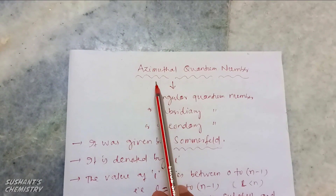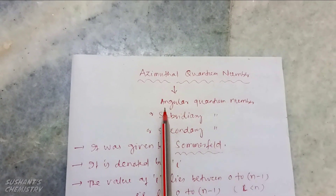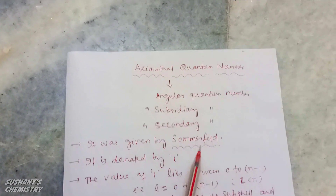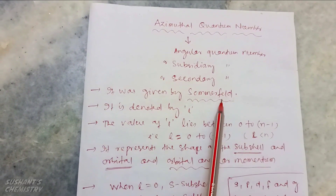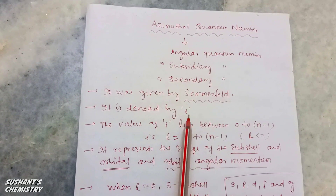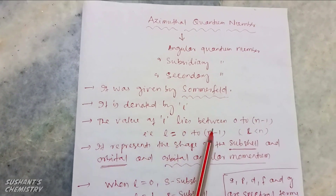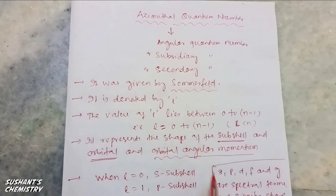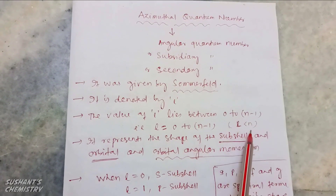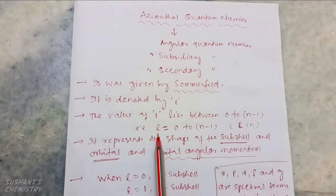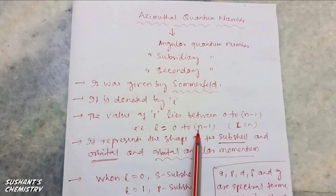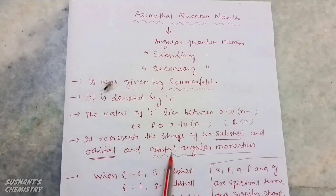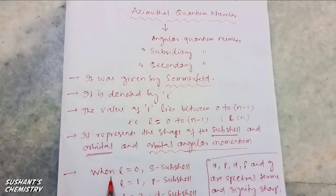Today we start with the azimuthal quantum number, also known as the angular quantum number, subsidiary quantum number, or secondary quantum number. It was given by Sommerfeld and is denoted by small l. The value of l lies between 0 to n minus 1, that is l equals 0 to n minus 1. A sub-cell is possible if the value of l is less than n. Here l is called the azimuthal quantum number and n is called the principal quantum number.